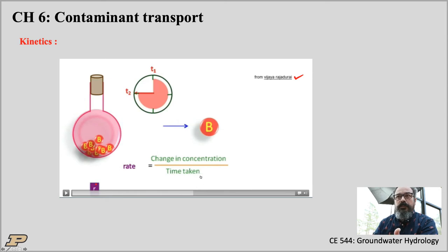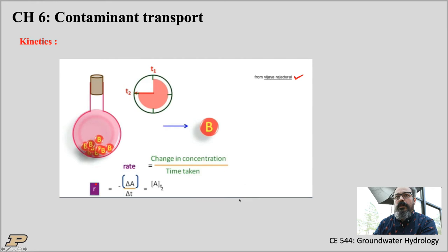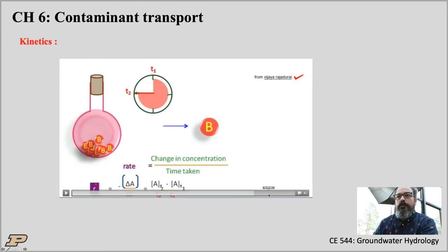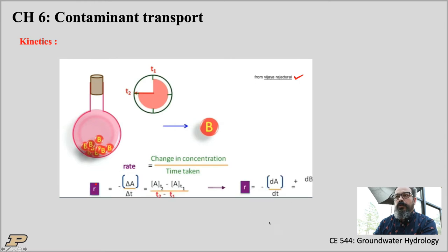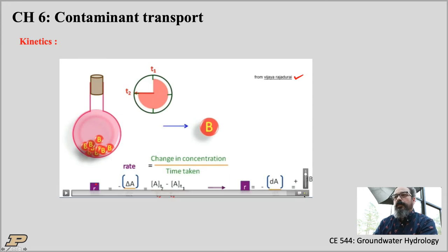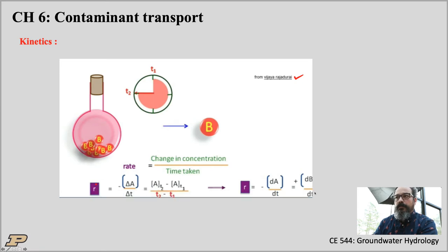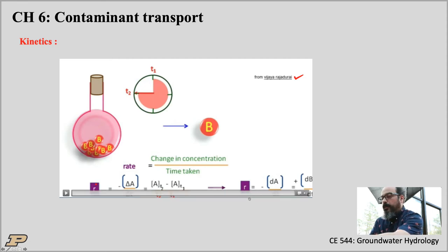The rate of the reaction is the change in concentration divided by time — mass per volume per time. In difference form: concentration at time two minus concentration at time one, divided by the time difference. In differential form, the reaction rate is minus dA/dt, which equals plus dB/dt. The product's rate of change is positive; the reactant's rate of change is negative. This is how kinetics work — determining the rate of the reaction.